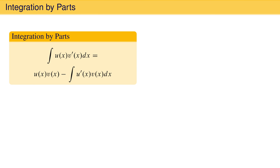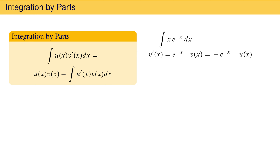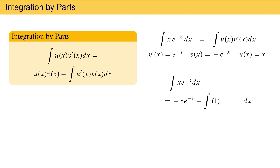Consider the integral of x times e to the minus x. This indefinite integral is not in the table of integrals mentioned previously, but we can evaluate it using integration by parts. Since e to the minus x is the derivative of negative e to the minus x, we define v prime of x to be e to the minus x, making v of x equal to negative e to the minus x. The remaining portion of the integrand is x, so we define u of x to be x. Using integration by parts, the integral of x e to the minus x dx equals minus x times e to the minus x minus the integral of 1 times negative e to the minus x.